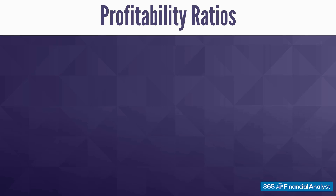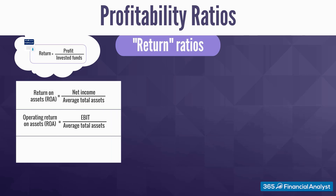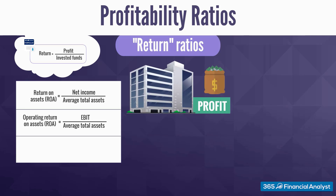Apart from margin ratios, there are some return ratios that also fall into the profitability group. We shall check out four of those measures. As a rule, we compute them by dividing a given profit metric by the amount of invested funds — most commonly, the total assets of a company. In like manner, we calculate return on assets and operating return on assets, allowing finance professionals to gauge the ability of a firm to make profits out of the assets it manages. You might also need the operating income as a percentage of total capital — this is how the return on total capital metric is calculated.